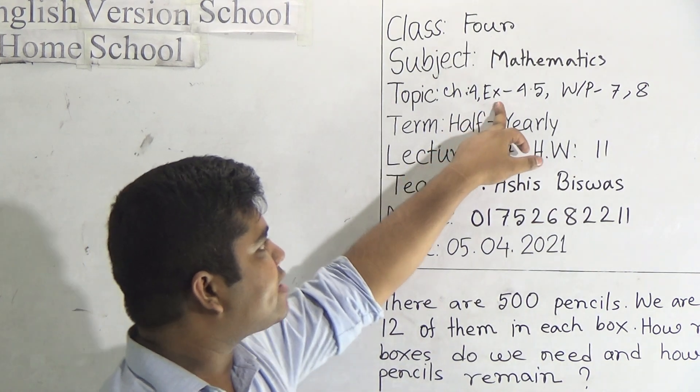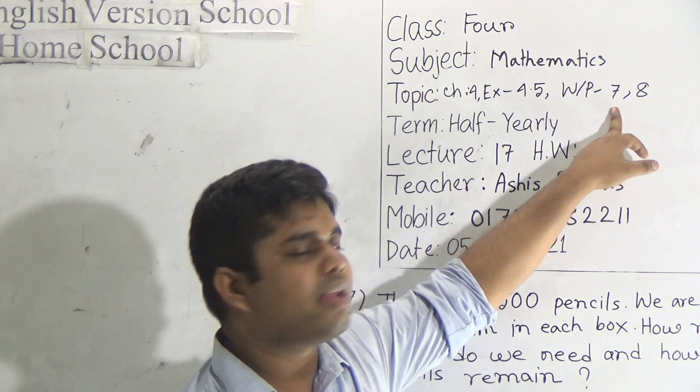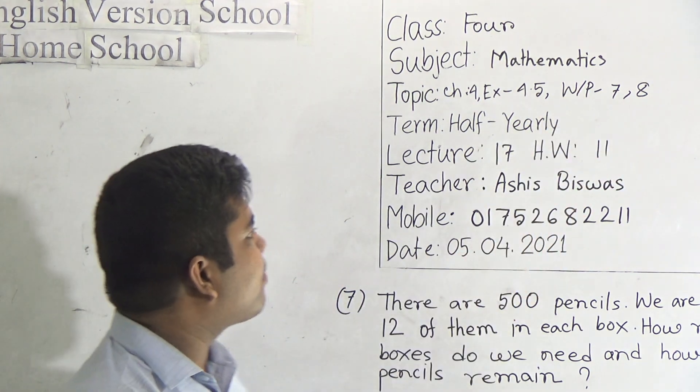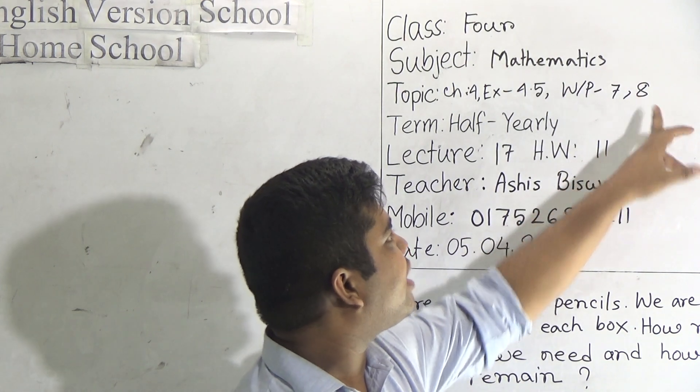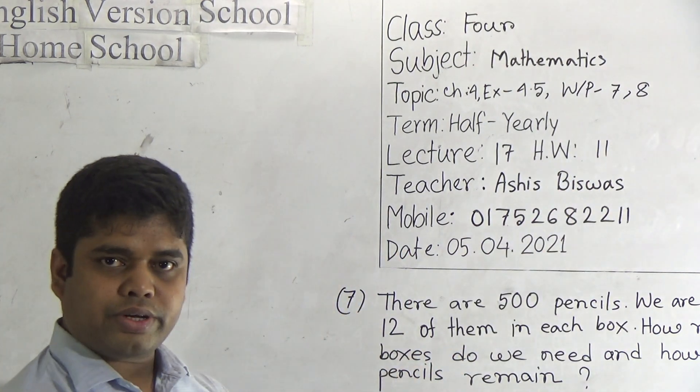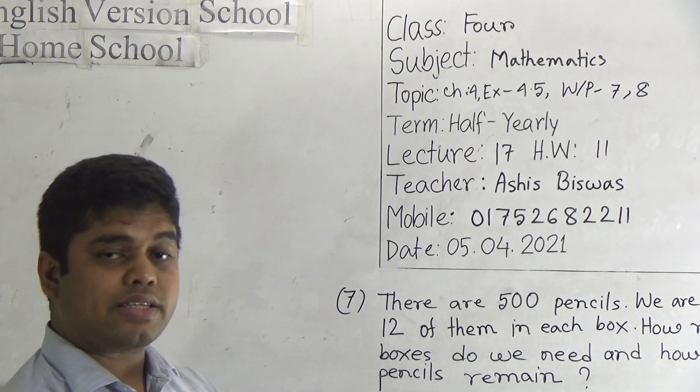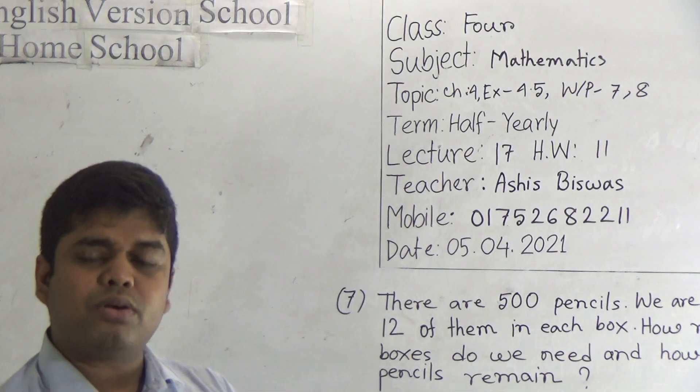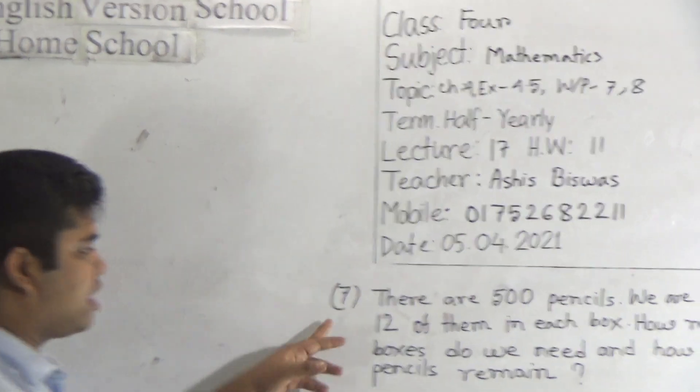So my dear students, let us start our class. Our today's topic is exercise 4.5, word problem number 7 and 8. And I have written this word problem 7 and 8 on the board. This 7 and 8 will be solved in our class as CW and it is your HW also. I repeat it is your HW also.